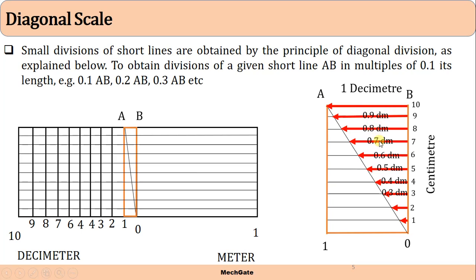So from one decimeter at the top, going down: 0.9, 0.8, 0.7, down to 0.2 and 0.1 decimeter. Since 0.1 decimeter is equivalent to one centimeter, this is how we divide one decimeter into 10 equal parts — that is the diagonal principle used in a diagonal scale. Each horizontal level corresponds to a value: the first line is 0.1 decimeter or one centimeter, the second is 0.2 decimeter or two centimeters, and so on.